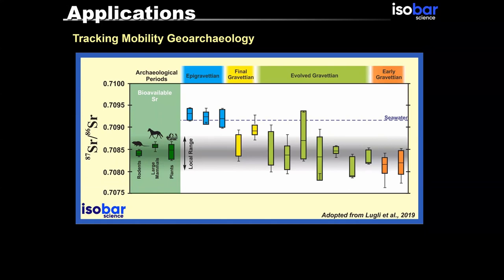They established the background signature by analyzing the strontium isotopes in small mammals like rodents and plants, which are the best choices if you want to establish your background signature. They also did some analysis on large mammals like horse, and they established this local range for the strontium.